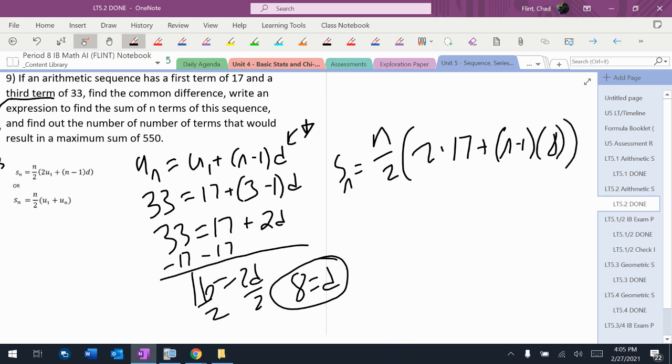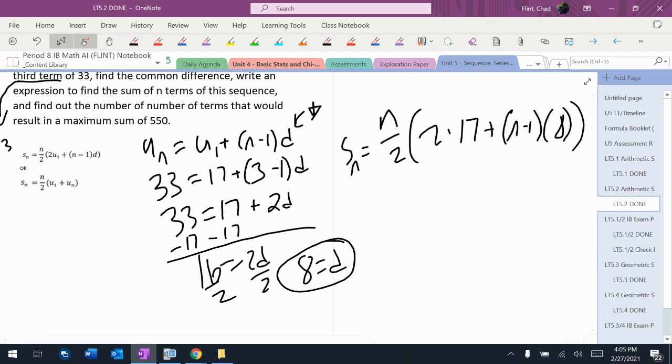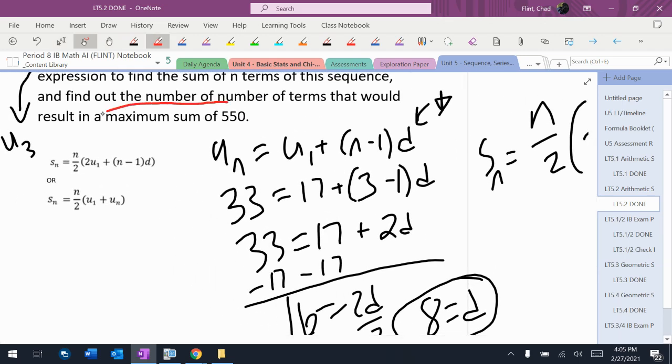Which is n/2(2 times u1 which is 17 plus (n-1) times the common difference which is 8). And then it said how many will result in a maximum sum of 550? That means 550 or less.